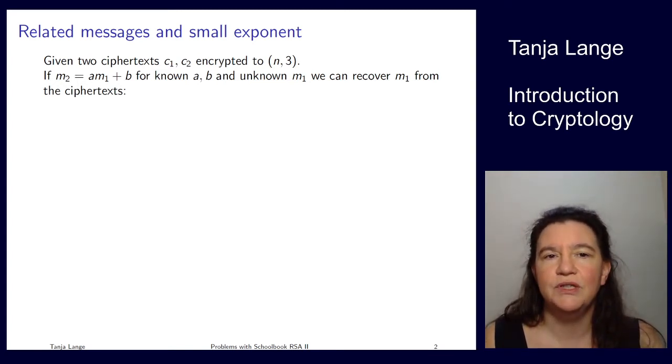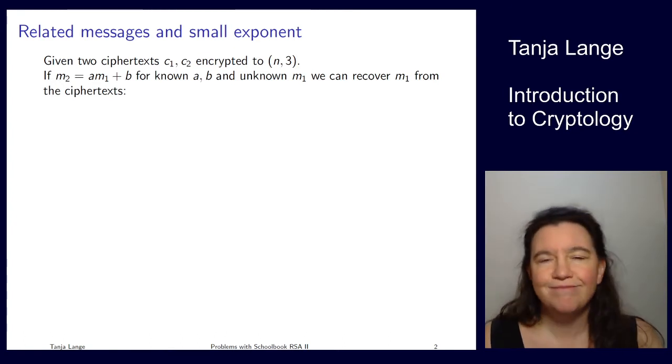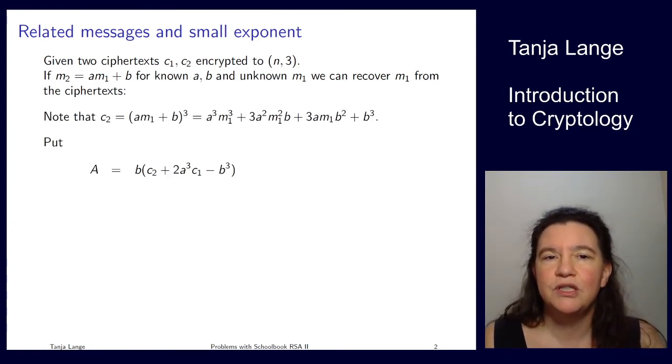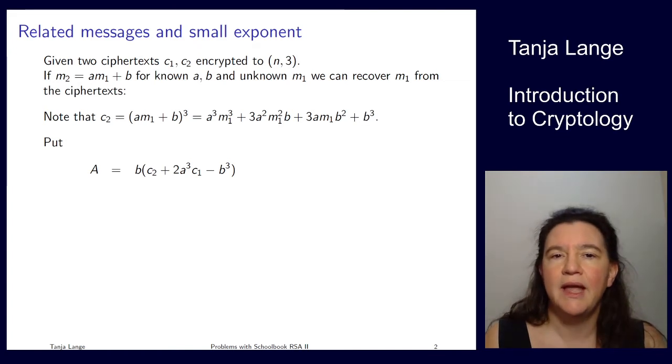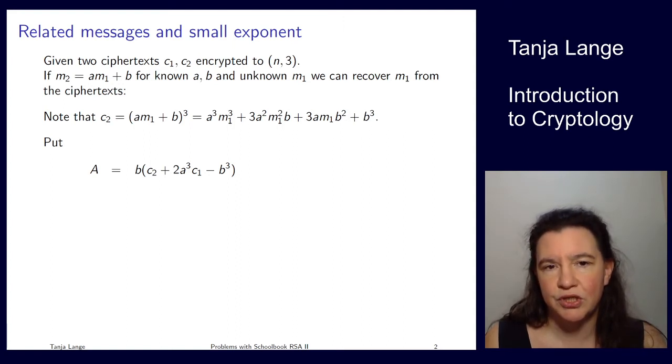We need to look at a little bit of the algebraic transforms. So let's look at what C2 actually looks like. So C2, well, the message 2 was A times M1 plus B, and then the encryption is just taking the third power of this. So here we're in the situation of small exponent RSA again, in the schoolbook method. So there's no padding, and the exponent is just 3.